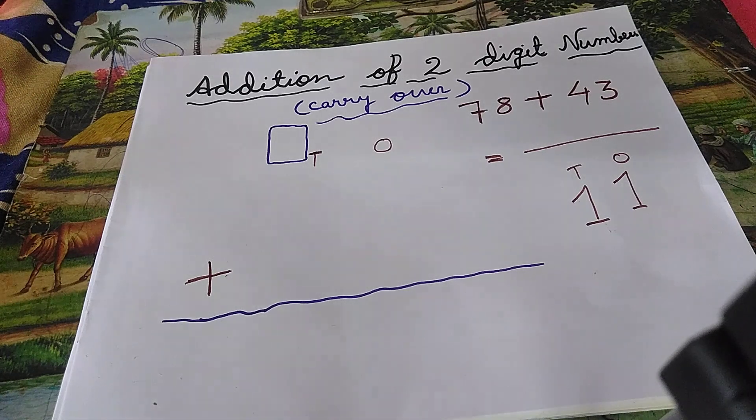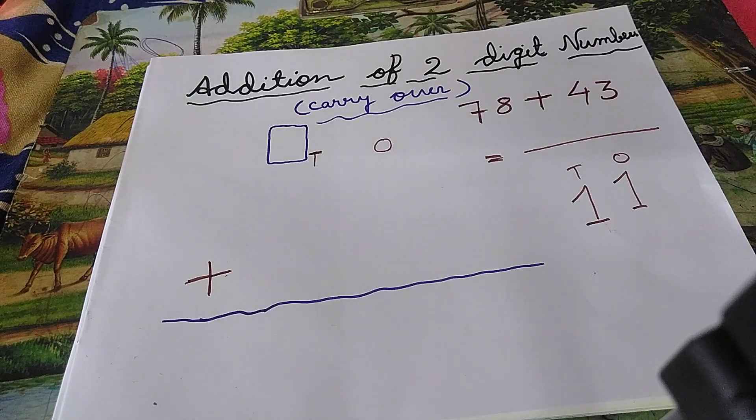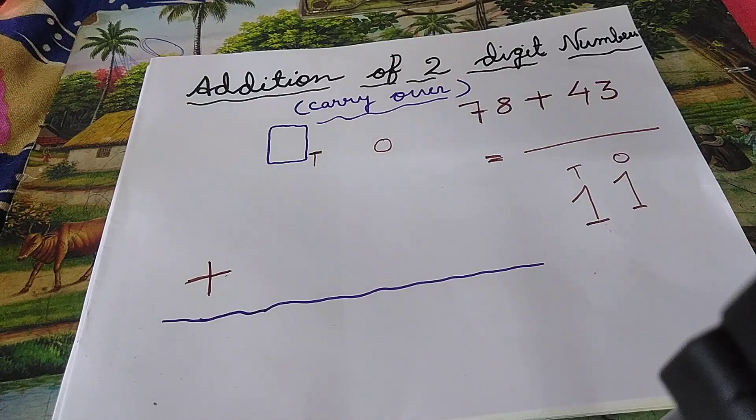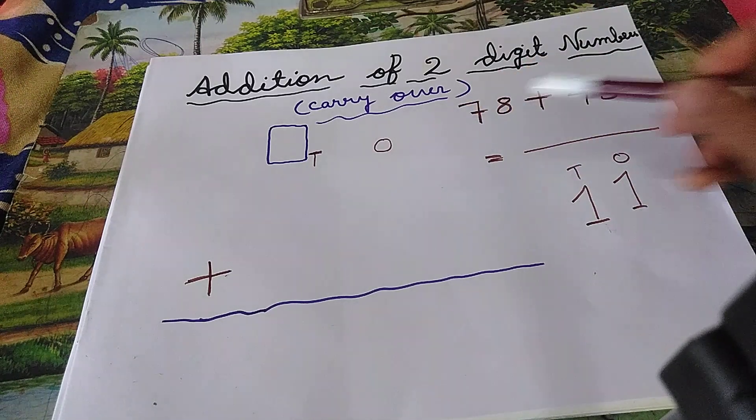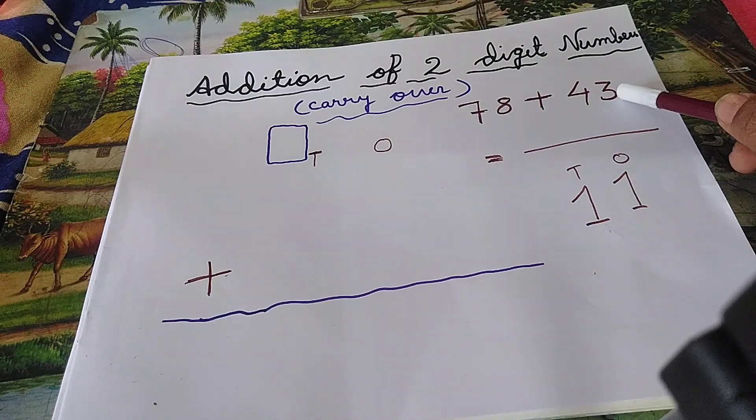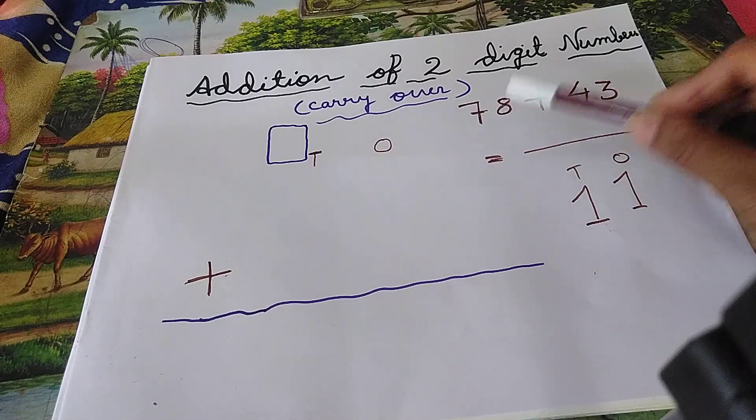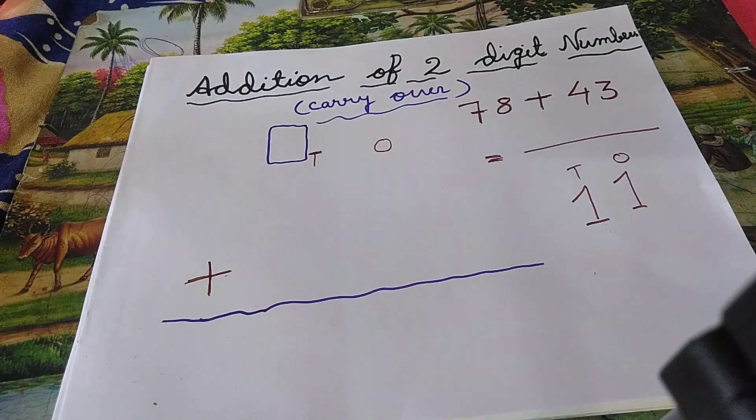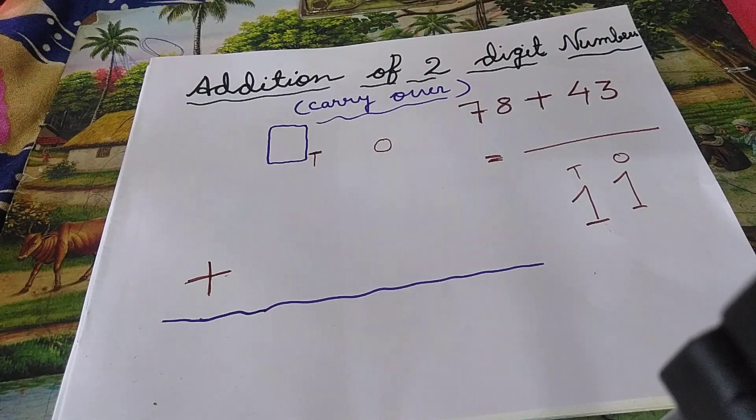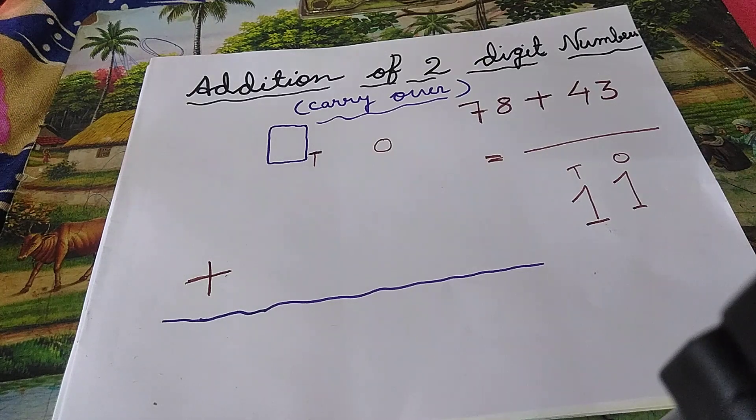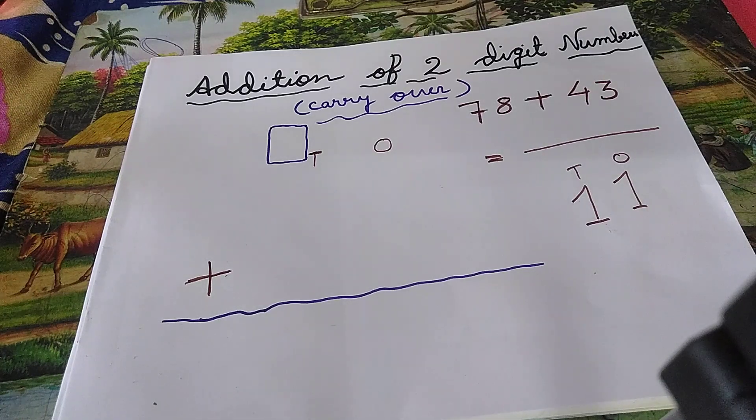Good morning children. Today I will discuss the addition of two digit numbers with carryover. See children, there is an example: 78 plus 43. We have to add these two numbers. 78 is a two digit number, 43 is also a two digit number. Children, I am not explaining what are two digit numbers or three digit numbers. Go to my channel and check the videos. All are explained there.